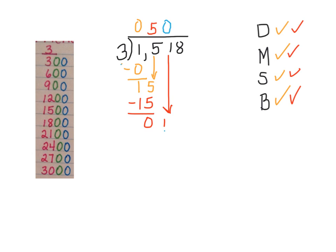You must record that 0 to show that 1 cannot be divided by 3. Then we multiply. 0 times 3 is 0. We subtract. We still have 1. Now we're ready to bring down the 8. I brought down my 8.